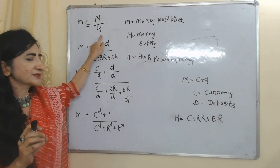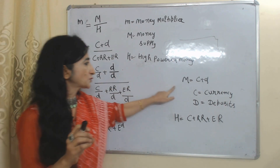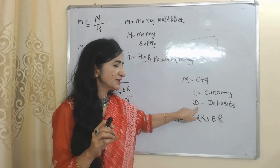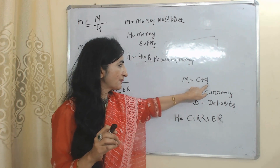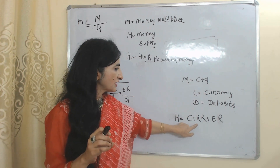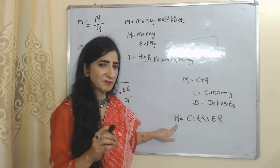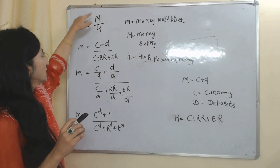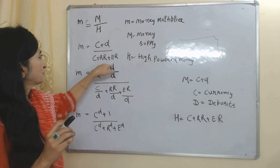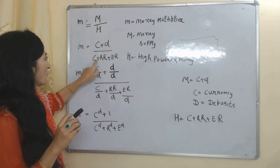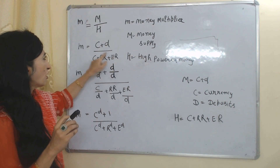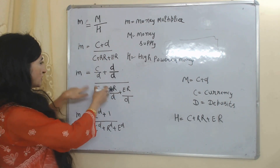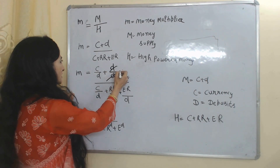As we know, money supply M is equal to C plus D, where C means currency with the public and D means deposits in the bank. And H equals C plus RR plus ER. Substituting these values into the formula, our equation becomes: (C plus D) over (C plus RR plus ER). We then divide both the upper and lower parts by D, and D cancels with D to become equal to 1.